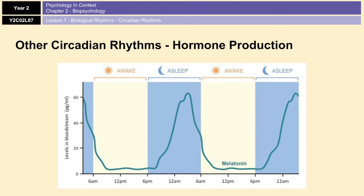Okay, so again, hormone production is a very important circadian rhythm and is important for the sleep-wake cycle. So before we finish, I've just got a couple of evaluation points for you. Let's take a little look at them.